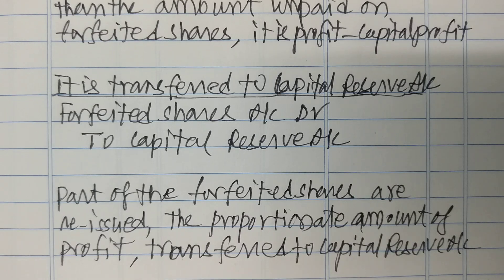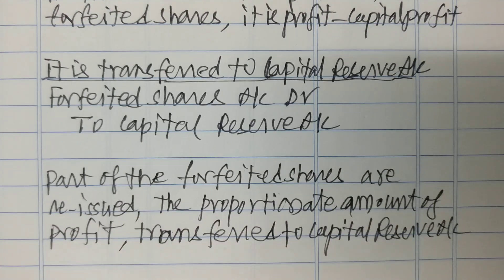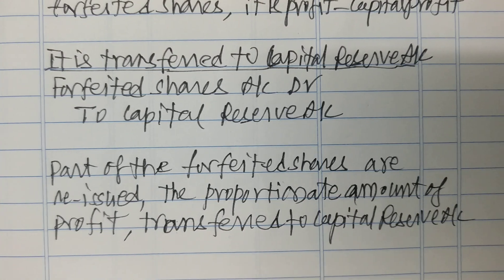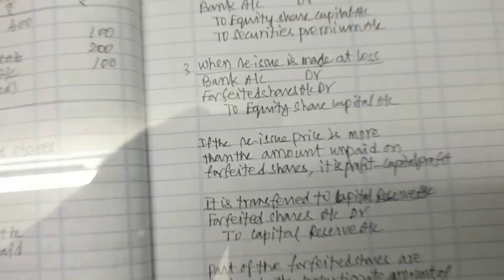If only part of the forfeited shares are reissued, the proportionate amount of profit is transferred to the capital reserve account. Thank you, students.